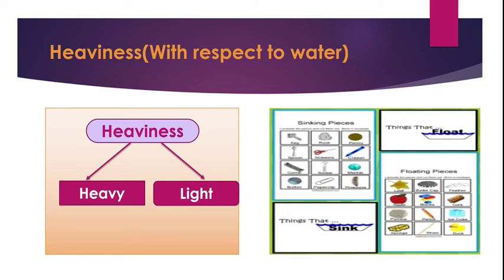Let's see some examples. Examples of heavy objects include a piece of key, a rock, a penny, a spoon, a pair of scissors, etc., whereas light objects which float are like a piece of leaf, feather, an apple, etc.